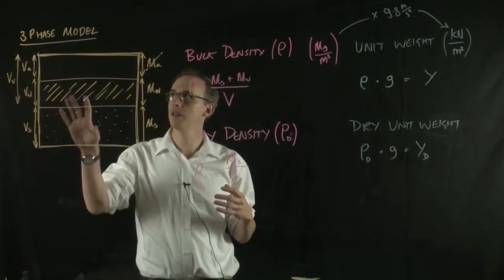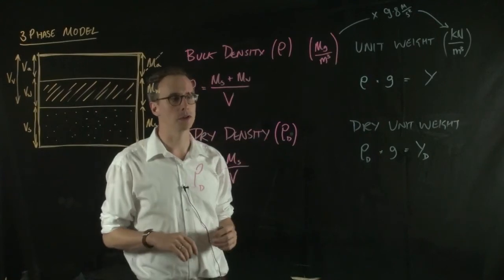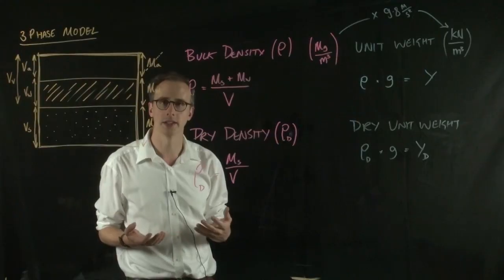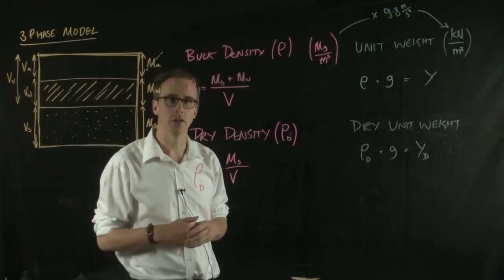So from the three phase definition of soils, we've been able to generate these four parameters: the bulk density, the dry density, the unit weight and the dry unit weight.